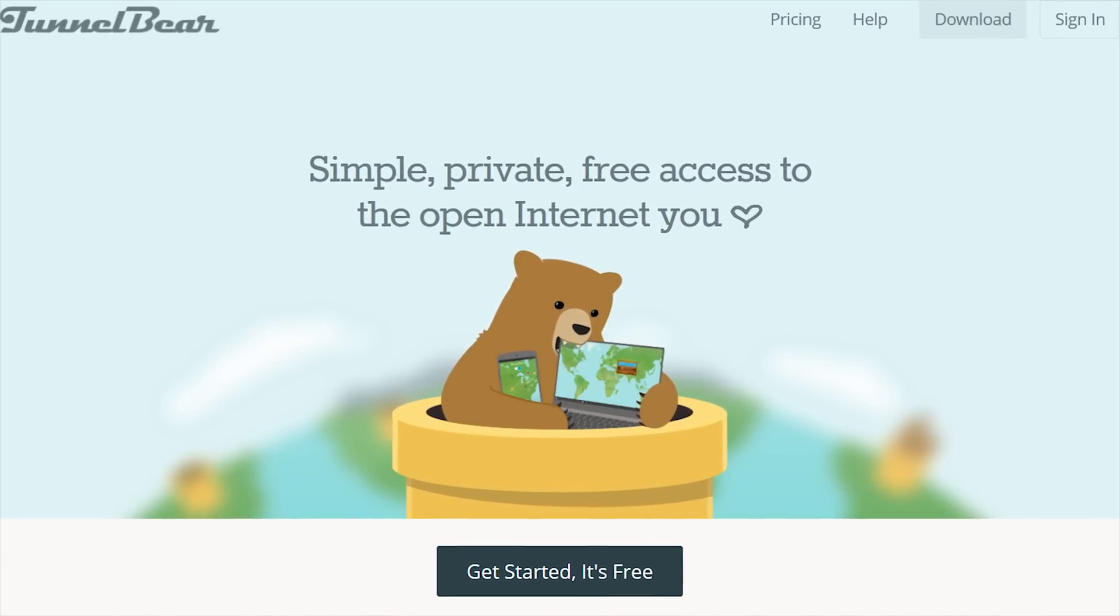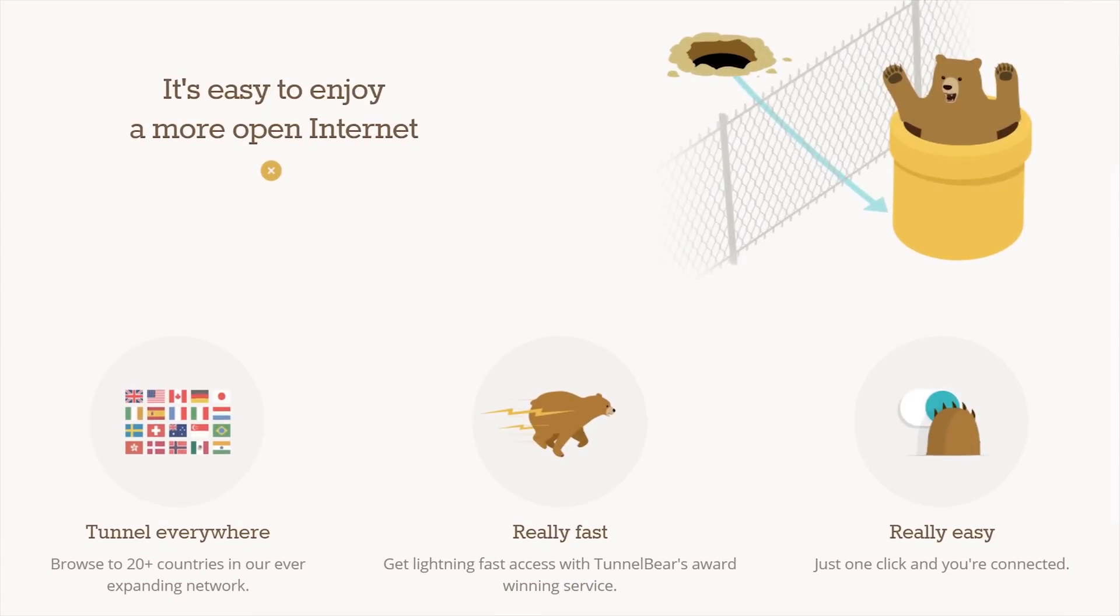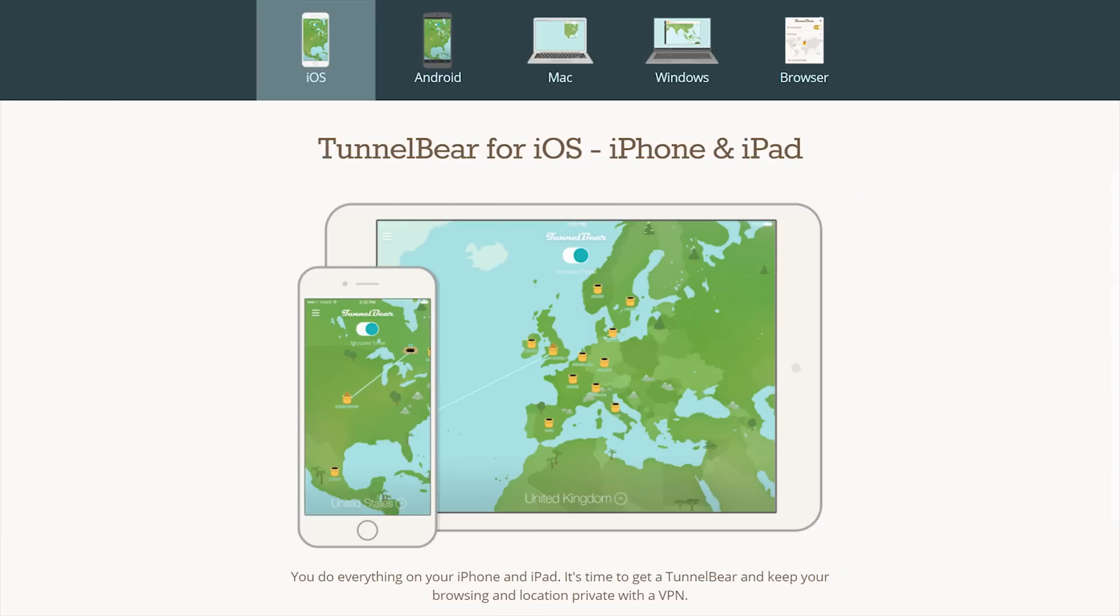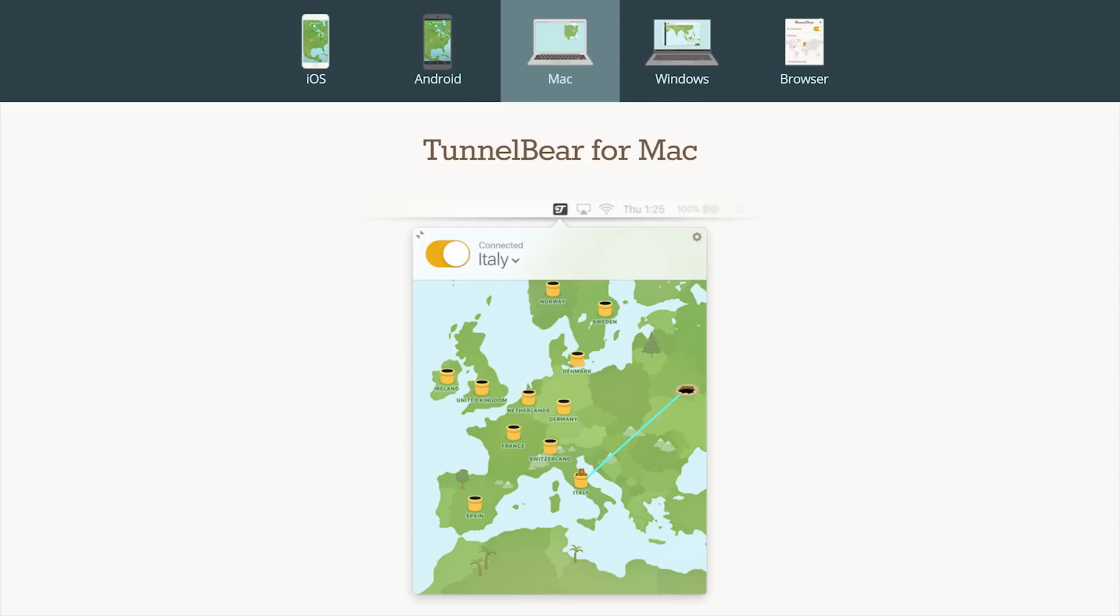TunnelBear VPN allows you to tunnel into 20 different countries, giving you the access to browse the internet from that country. And they have easy to use apps for iOS, Android, PC, and Mac, and they also have a Chrome extension.